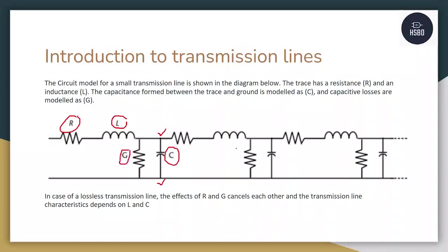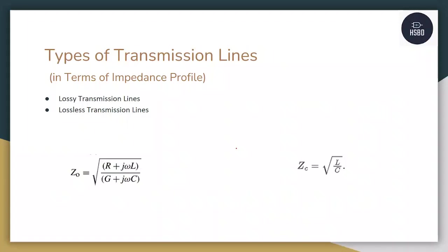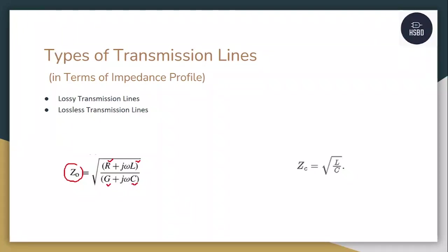A model of a transmission line can be created like this. There are majorly two types of transmission lines: one is lossy and the other is lossless. We differentiate both using the characteristic and target impedance formula. The characteristic impedance of a lossy transmission line includes the values of R, L, G, and C. The formula for Z0 is the square root of (R + jωL) / (G + jωC), and this is the lossy transmission line impedance.